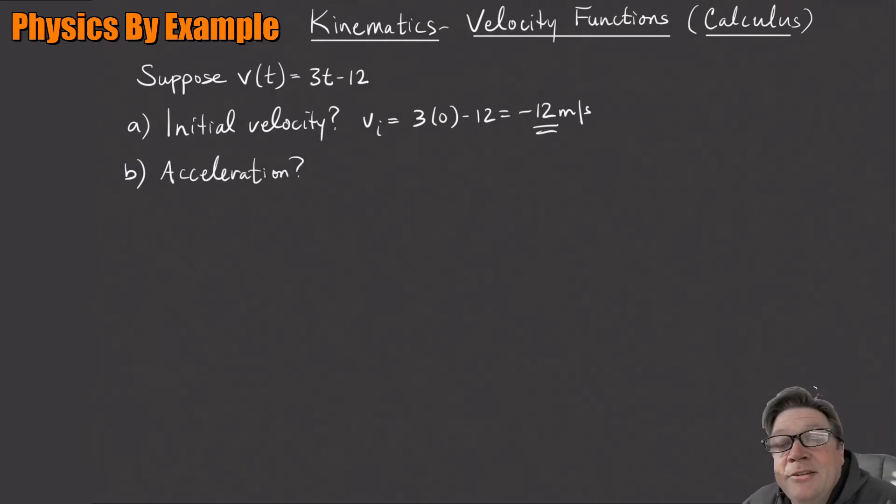Remember that acceleration is defined as dv/dt. We just take the derivative of the velocity. What is the derivative of 3t minus 12? You can forget about the 12 because it's constant.